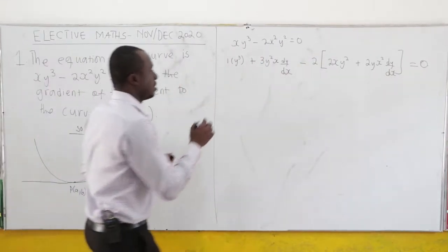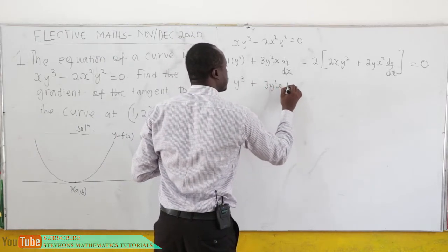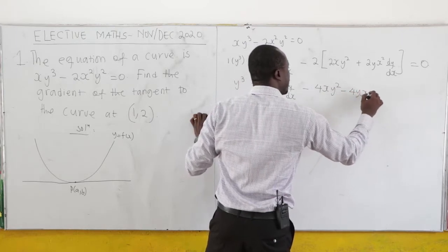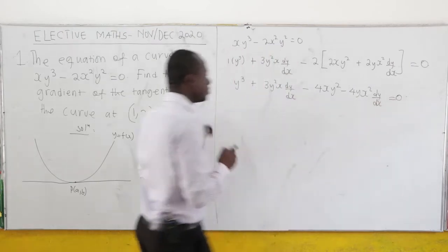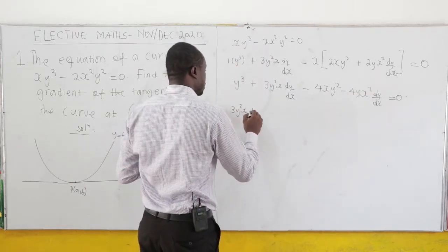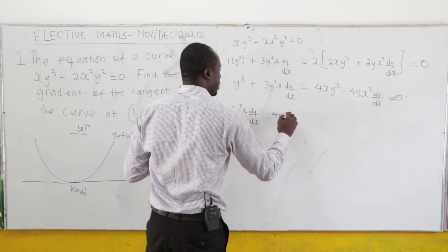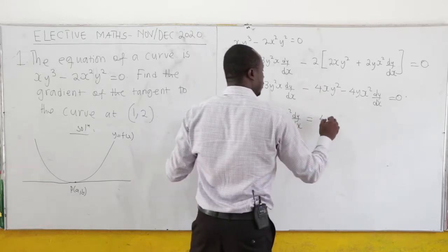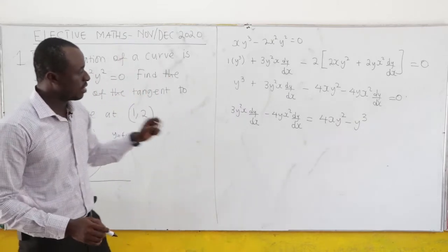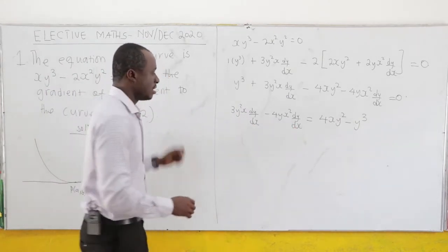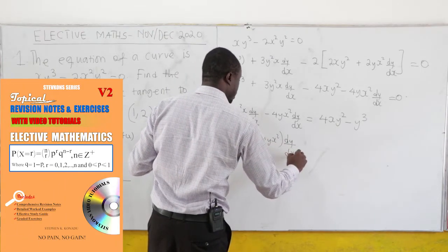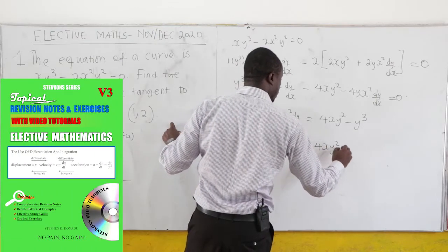Now we want to find dy/dx. We have: y cube plus 3y square x dy/dx minus — when you expand — you get 4xy square minus 4y x square dy/dx equals 0. We have dy/dx terms here and here, so let's move all other terms to the other side. So we have 3y square x dy/dx minus 4y x square dy/dx.